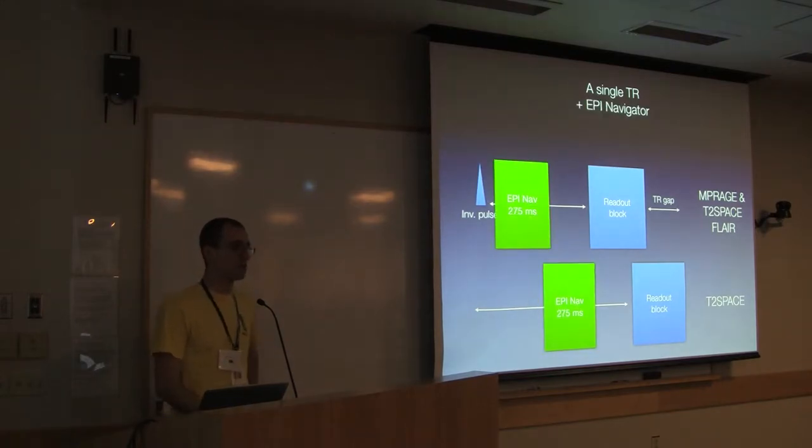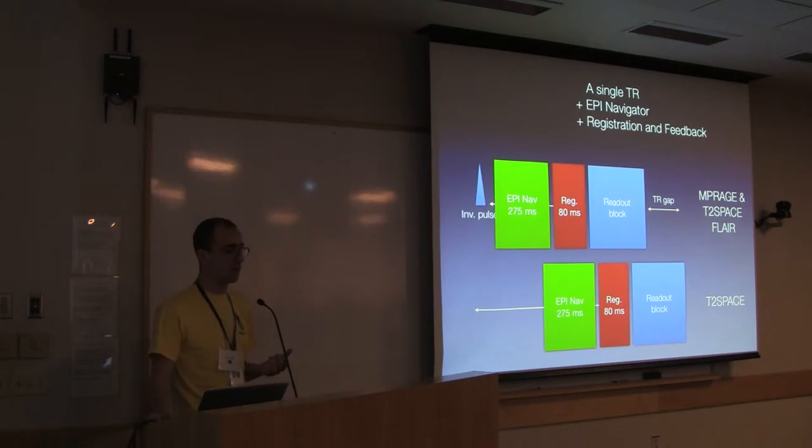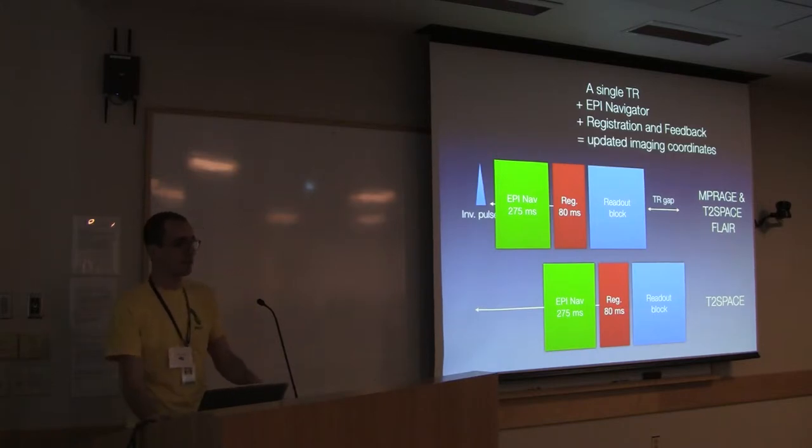What we do is in all that dead time, we stick in an EPI-based navigator. We can get a whole head volume in about 275 milliseconds. Then we do, on the scanner, we do image registration and feedback our estimate of where the person's head has moved. That takes us about another 80 milliseconds to do the registration and feedback. The combination of doing this every TR gives us updated imaging coordinates. We get a new image that tells us where the person is, we register, we feed it back. We change the imaging coordinates so that now our MP-RAGE is actually imaging in head coordinates wherever the person moves their head, instead of stuck in standard coordinates or wherever you put them when you hit go.